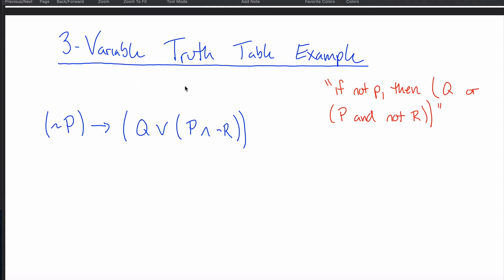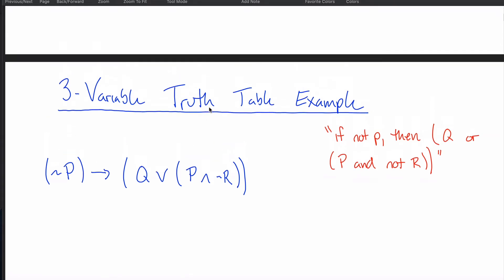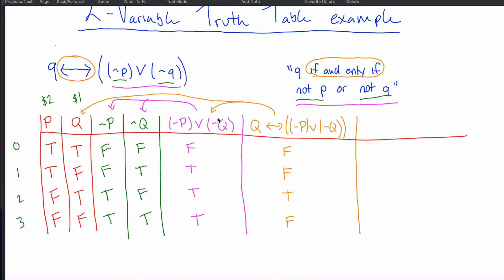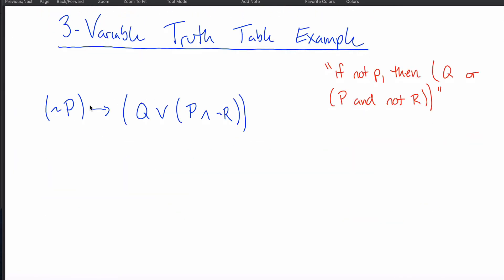This is a three-variable truth table example, unlike the last one which was a two-variable example. The last example only involved P and Q, but this one has P's, Q's, and R's — three different variables. You can write this purely symbolically or in English, but with three variables and lots of conjunctions it can be hard to write in English without being ambiguous, so typically people read them symbolically at this level of abstraction.